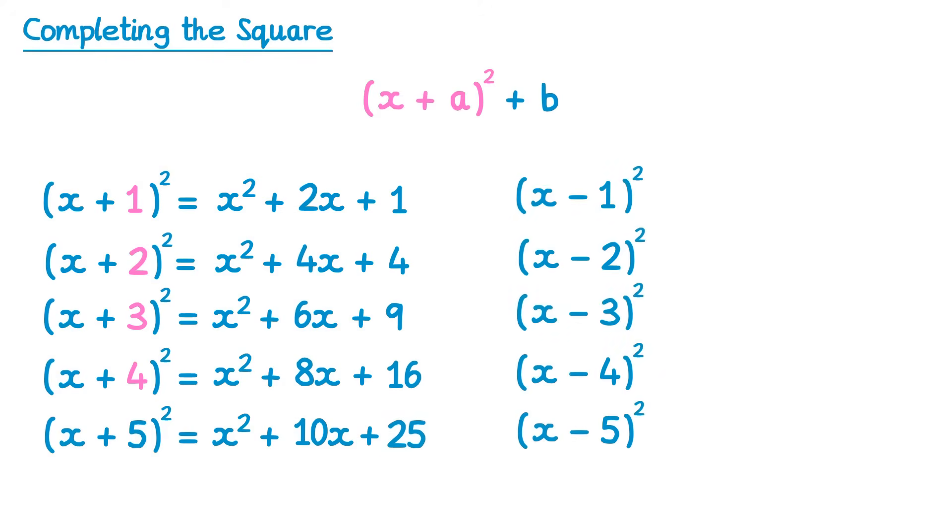Now what happens when the terms are negative? Well once again they always begin with x squared, and once again we double the number in the brackets to get the coefficient of x. So take the negative number, times it by 2, and you'll get your coefficient of x. But beware this time it would be negative.